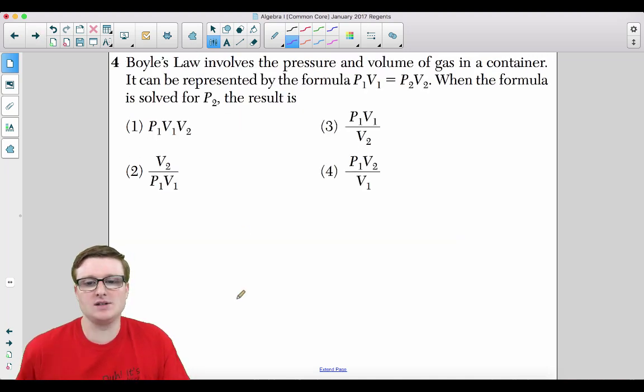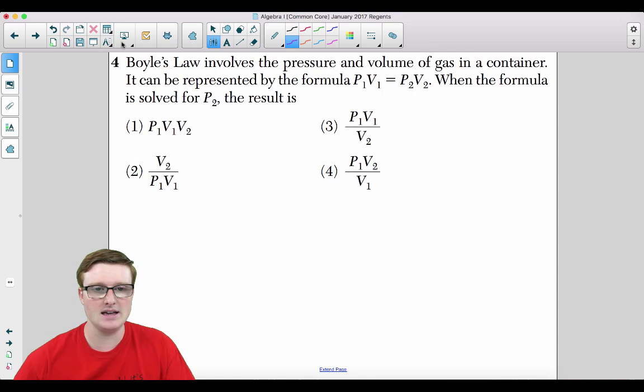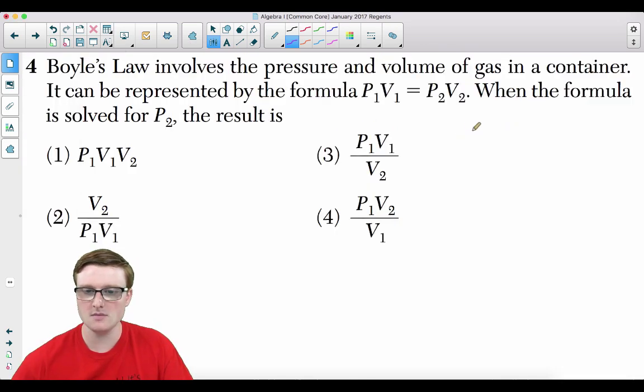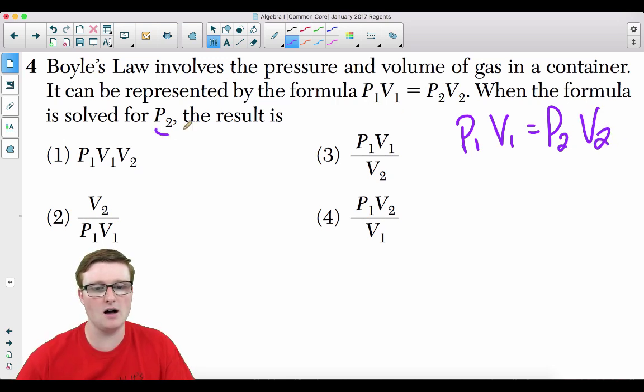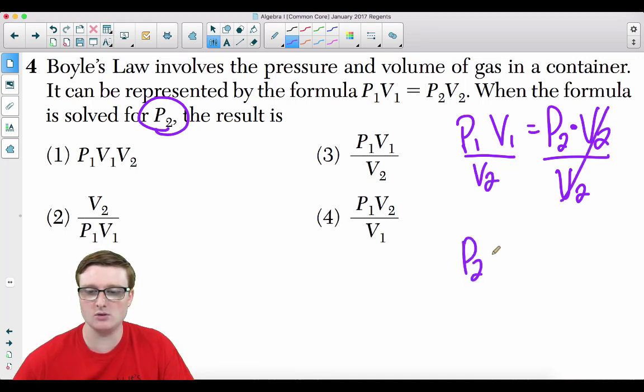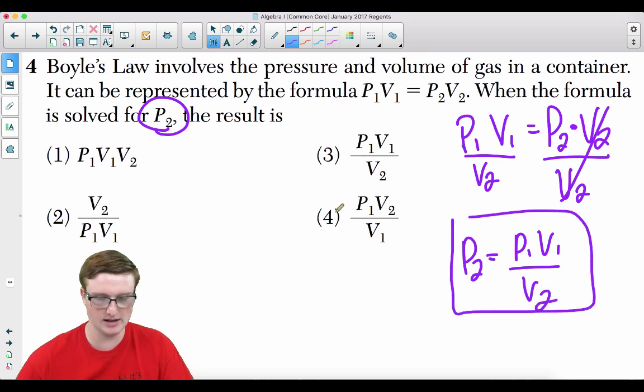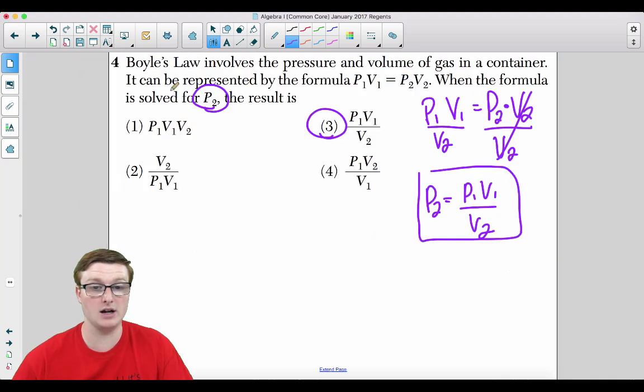Number 4. Boyle's law involves the pressure and volume of gas in a container. It could be represented by the formula P1V1 equals P2V2. When the formula is solved for P2, the result is what? All we need to do is take P1V1 equals P2V2, and you're trying to solve for P of 2. Since P of 2 is being multiplied by V of 2, you just divide by V of 2 on both sides. Those cancel. You get P of 2 is equal to P1V1 over V2. And that is your answer. That is going to be choice 3.